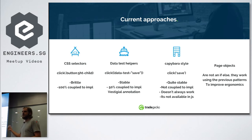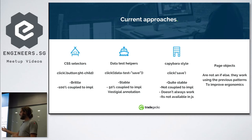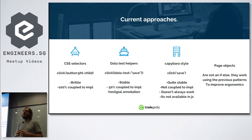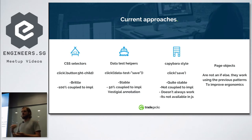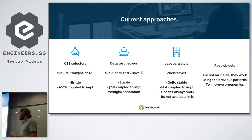Another approach — Capybara-style — uses the way a user will experience the site to drive tests. To click the save button, you just say 'click save.' It's quite stable because if the label changes it's probably a bug, and if it's not a bug then we should update the test because the user experience has changed. It's not coupled to the implementation because you can read the design and write the test.